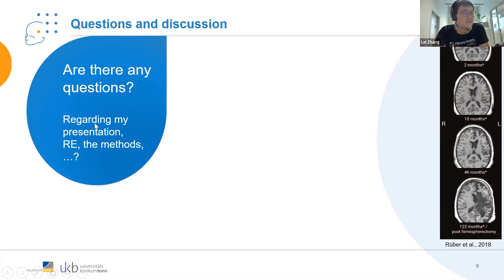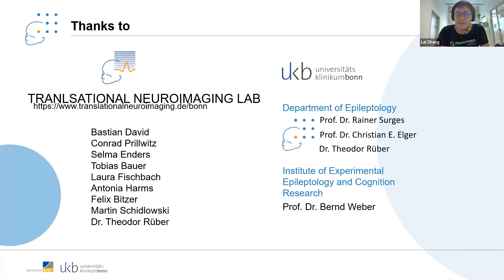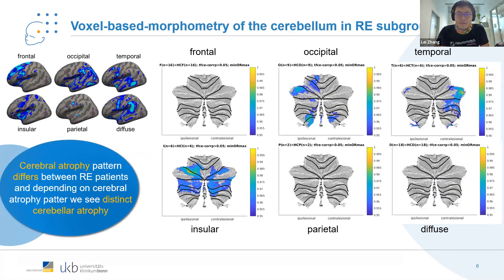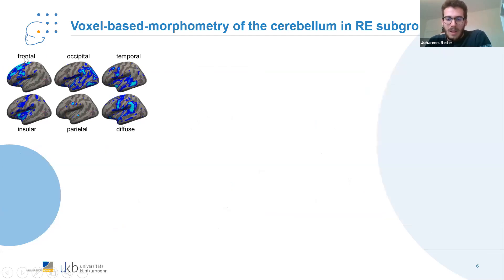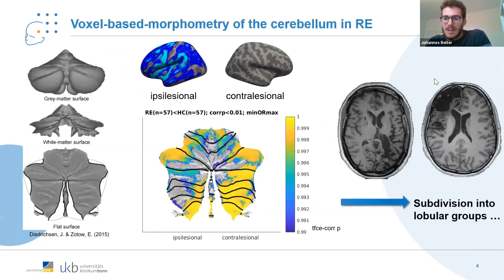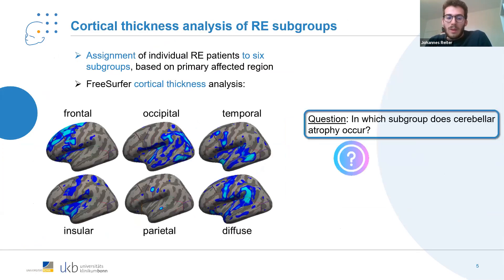You mentioned that you subdivided the group into six subgroups — in which criteria did you perform this division or classification? Thanks for the question. For the first step, we did it visually. As I showed on the slide, there are some patients who showed a kind of clear atrophy pattern, and we classified them accordingly.